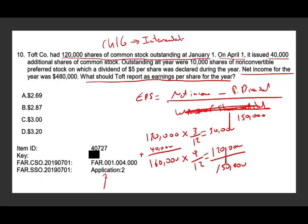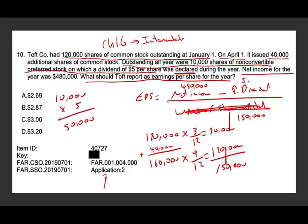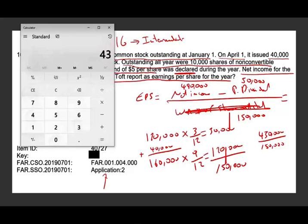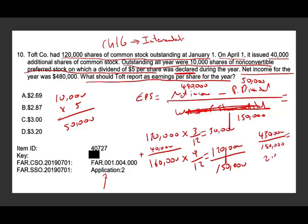Now for the numerator: net income is given as $480,000, minus preferred dividends. There are 10,000 shares of non-convertible preferred stock with $5 per share declared, so 10,000 times $5 equals $50,000 going to preferred shareholders. So $480,000 minus $50,000 equals $430,000. Dividing: $430,000 divided by 150,000 equals $2.87. That's the answer.